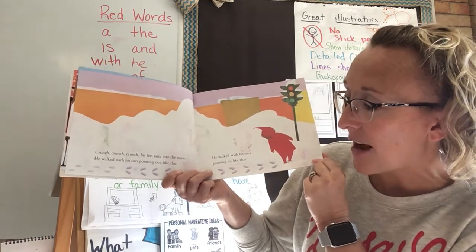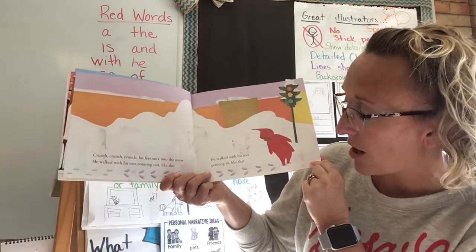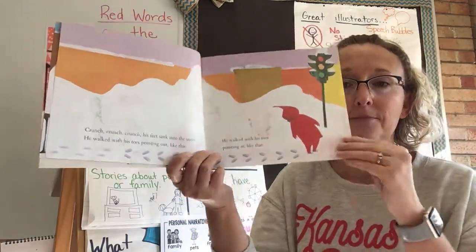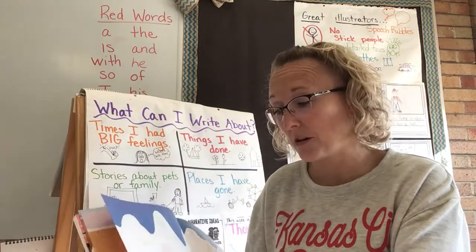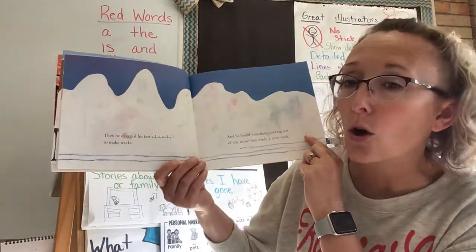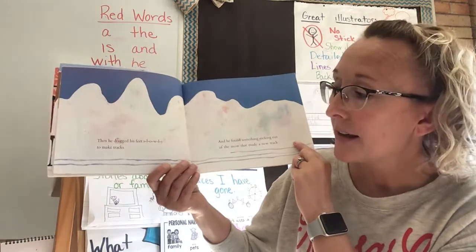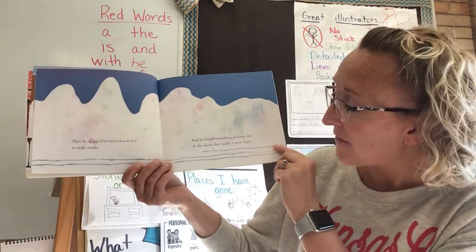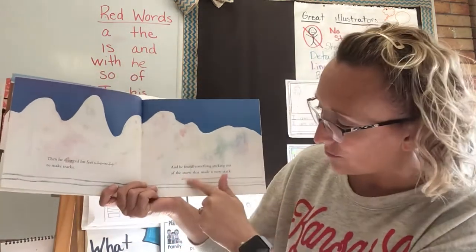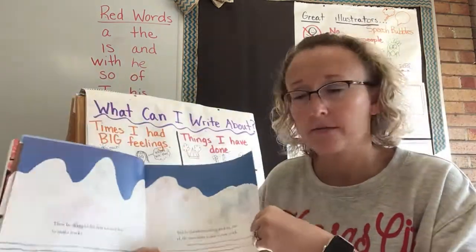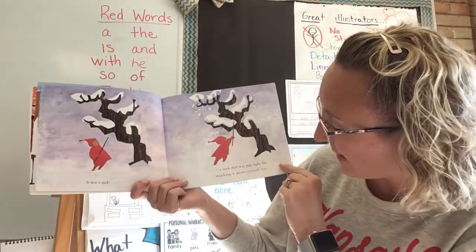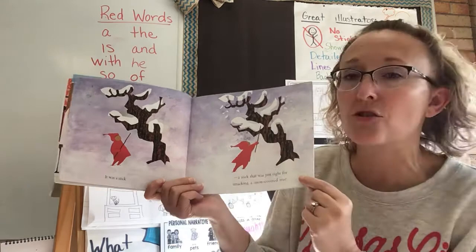So far it started in the morning and then said 'after breakfast,' so it's kind of progressing through the day — he's just telling about his day. 'Crunch, crunch, crunch — his feet sank into the snow. He walked with his toes pointed out, and he walked with his toes pointed in.' He's walking kind of like a penguin. The pictures match the words! Then he dragged his feet slowly to make tracks and found something sticking out of the snow — a stick, just right for smacking a snow-covered tree.